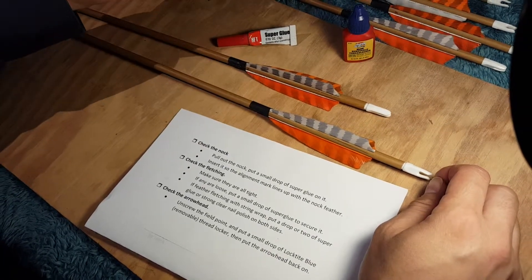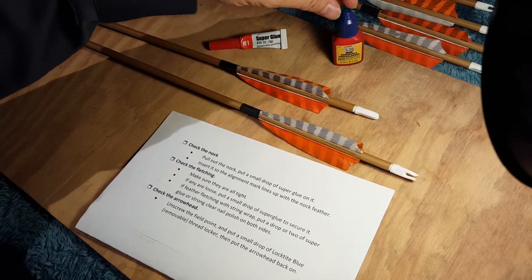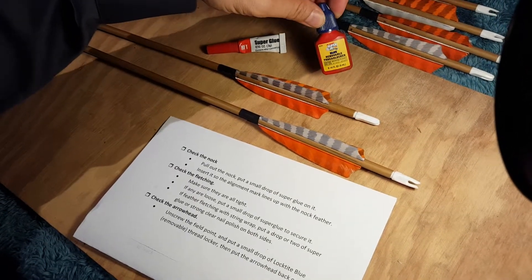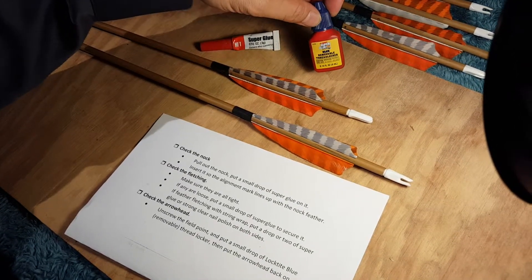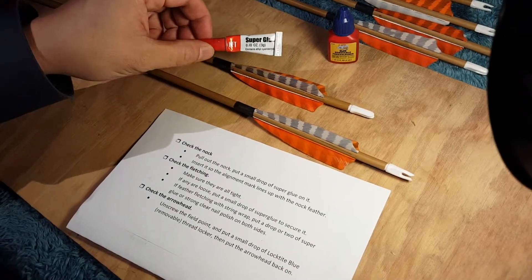Before I get started, there will be a handy handout that I will make available. There are also two tools that I use: one is blue Loctite or thread locker, a removable thread locker, and a little tube of super glue.